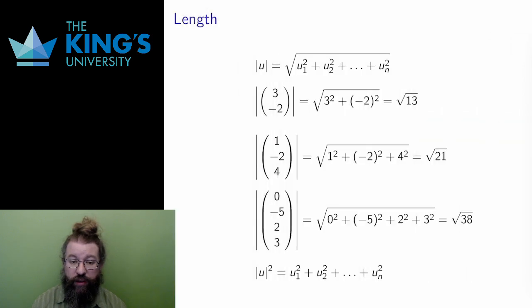The length of a vector is a new operation, written with vertical bars around the vector. Geometrically, it does what it says, tells you how long the arrow is. The algebra is just the Pythagorean rule for triangles. a squared equals b squared plus c squared, but extended. The length of a vector u is the square root of all the squares of each component. And this works for any dimension.